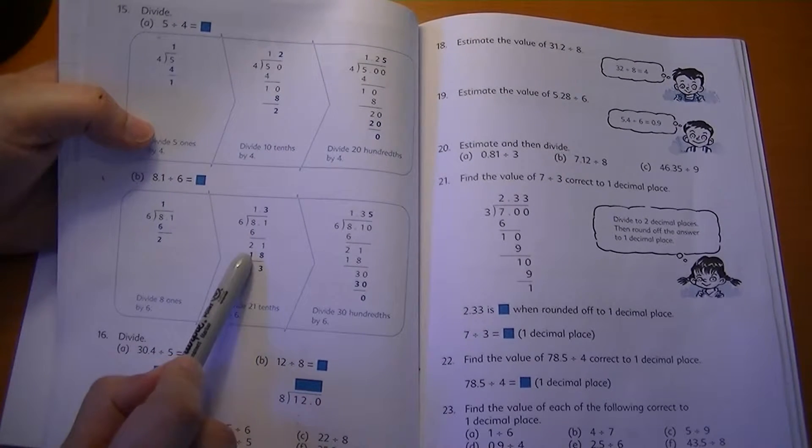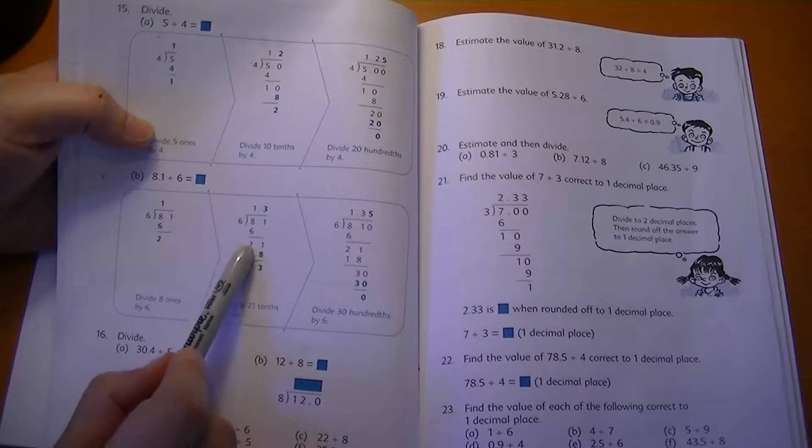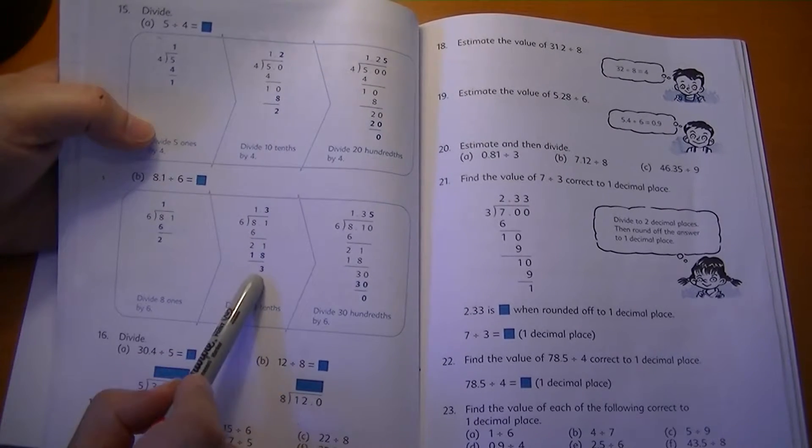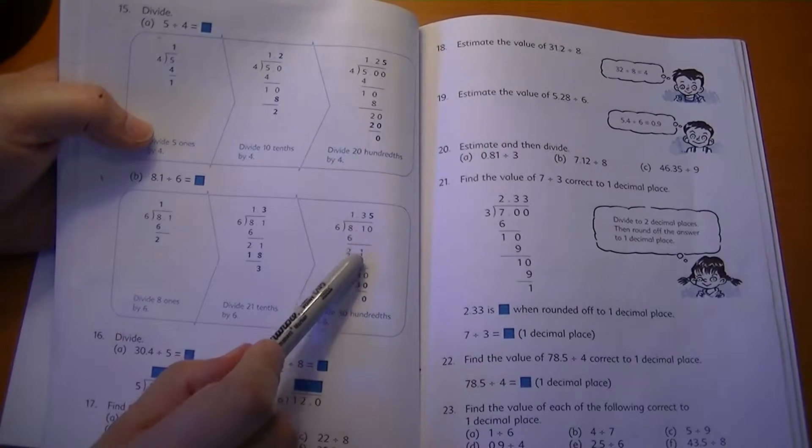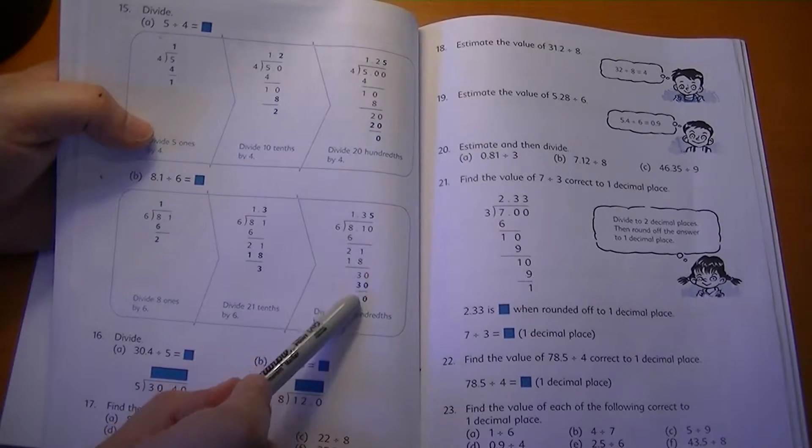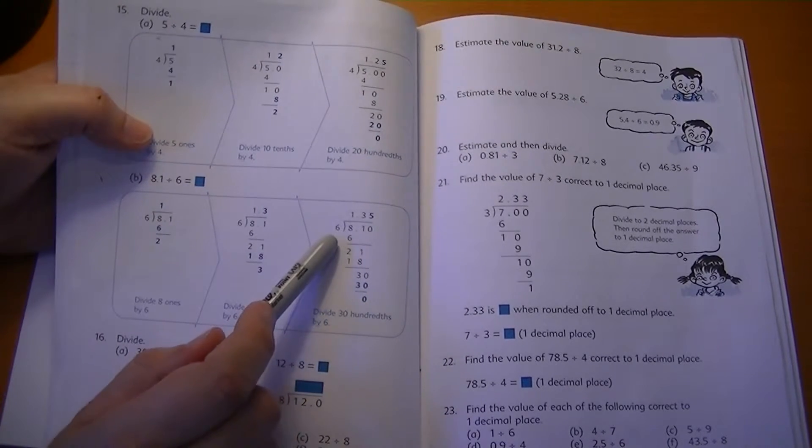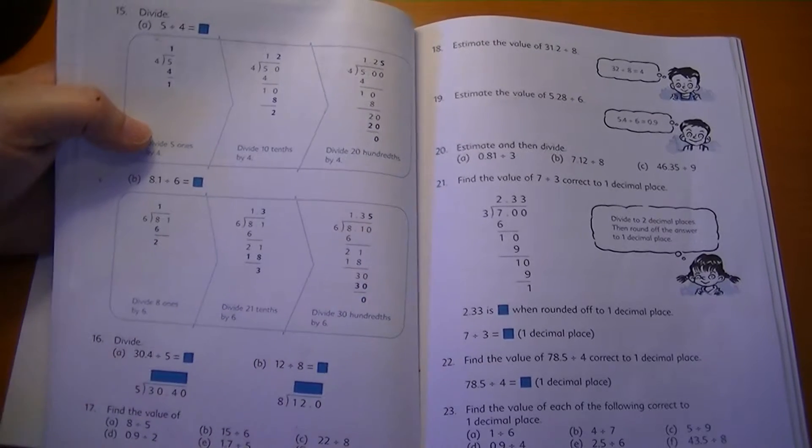Six goes into twenty-one how many times? Three times. Six times three is eighteen. Twenty-one minus eighteen is three. Then we add a zero and bring it down. Now we have thirty. Six goes into thirty how many times? Five. So five times six is thirty. Thirty minus thirty is zero. So the answer is six goes into 8.10, 1.35 times.